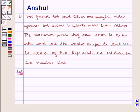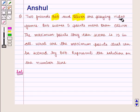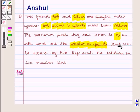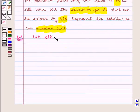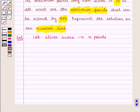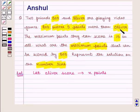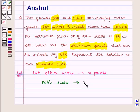Let us move on to the solution. In this question we are given that two friends Bob and Oliver are playing video games. Bob scores 5 points more than Oliver, and the maximum points they can score is 15 in all. We need to find the maximum points that can be scored by Bob, and represent the solution on the number line. So here let Oliver score x points. As Bob scores 5 points more than Oliver.